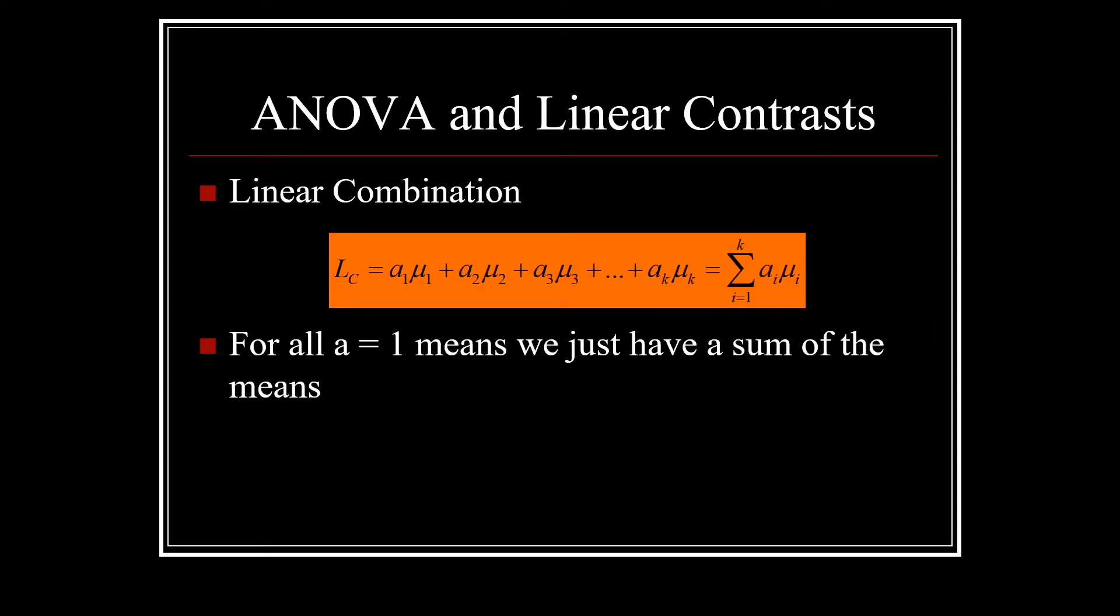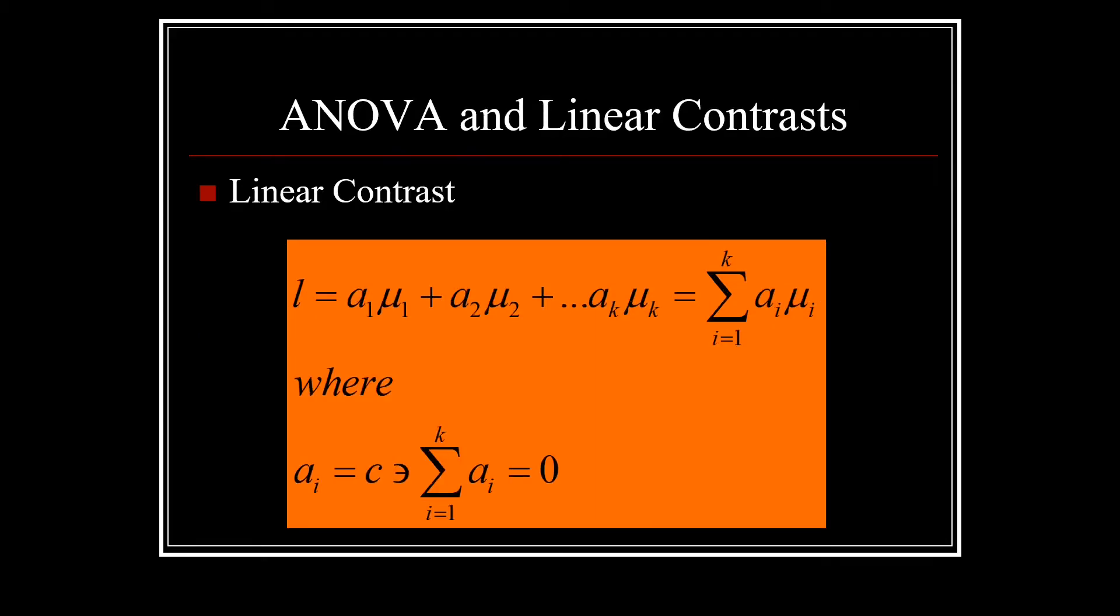Our linear contrast is nothing more than a linear combination such that the sum of a_i mu_i equals our linear combination. We'll call this little l the sum of our a_i mu_i. In other words, a1 mu1 plus a2 mu2 plus all the way up to a_k mu_k. However, a_i is going to be a constant such that when we sum these a_i's up, we equal zero.